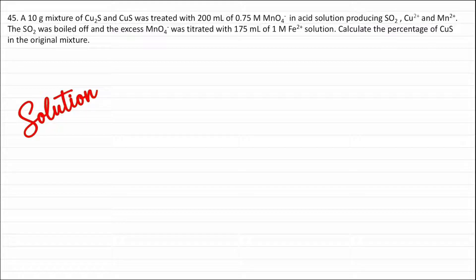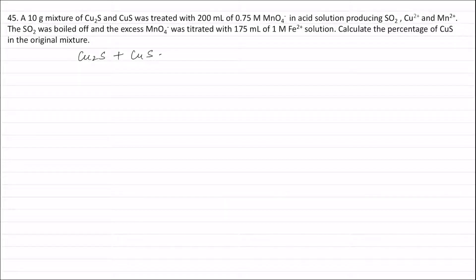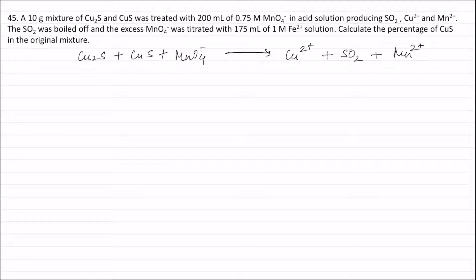The mixture of Cu₂S and CuS reacts with MnO₄⁻ to form Cu²⁺ ion plus sulfur dioxide plus Mn²⁺.